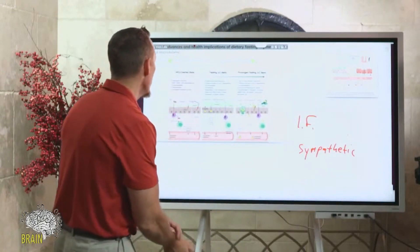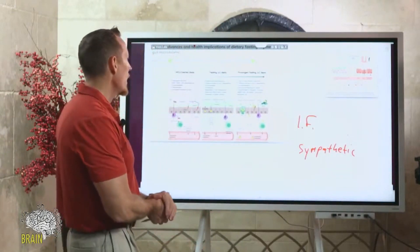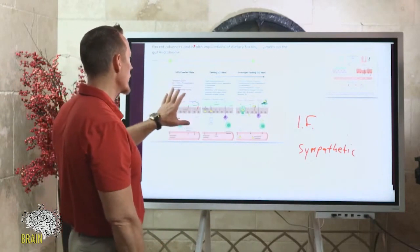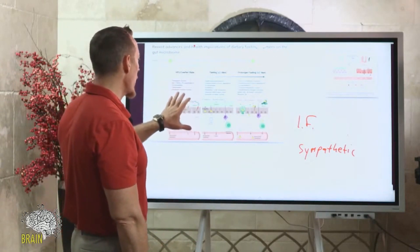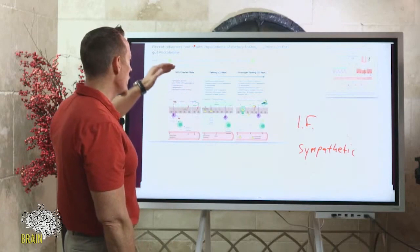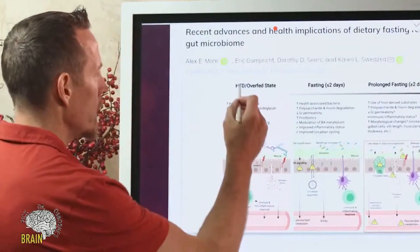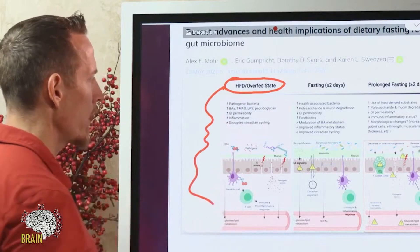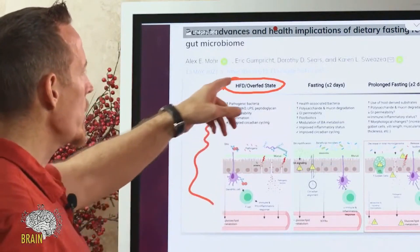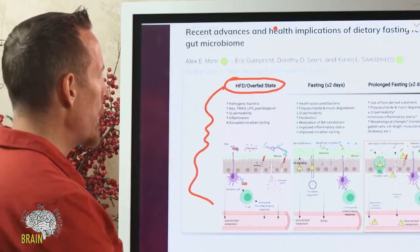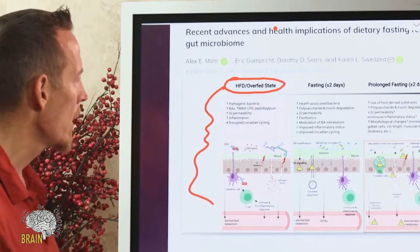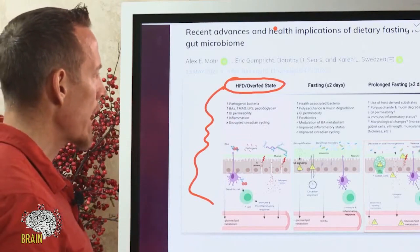This was an image just here very recently published on the benefits of fasting. What we're looking at here is the overfed state, which is what this block here is reading. What happens when you overfeed your body? It increases bad bacteria, pathogenic bacteria. It increases the types of pathogenic bacteria.